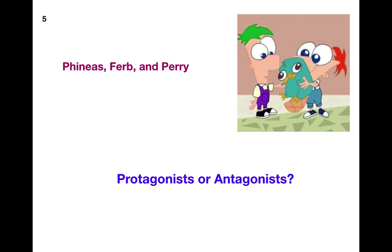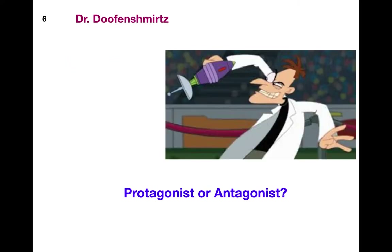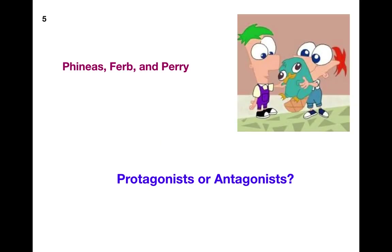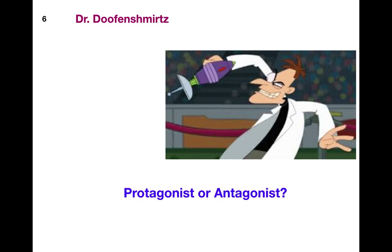Number 5 — Phineas, Ferb, and Perry the Platypus. Are they protagonists or antagonists? Have you ever seen Phineas and Ferb? One of my all-time favorite shows. Number 6 — Dr. Doofenshmirtz. Would he be a protagonist or an antagonist? Phineas, Ferb, and Perry are the central characters of the story — the main characters — so they would be the protagonists. Dr. Doofenshmirtz opposes them, so that would make him the antagonist.